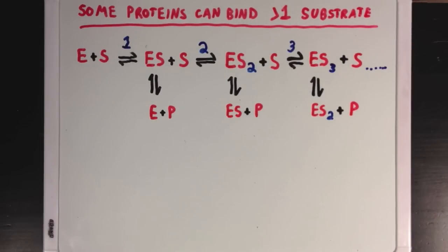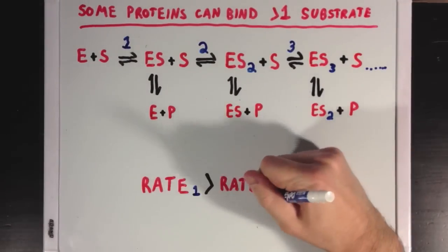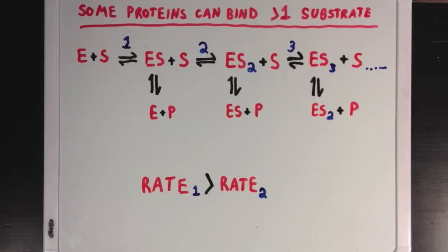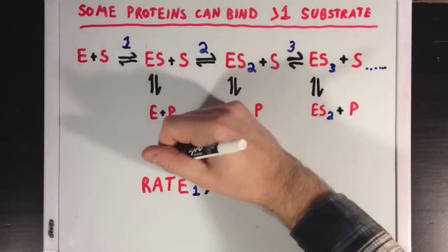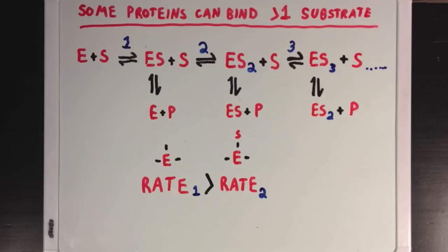You would expect the rate of reaction 1 to be faster than the rate of reaction 2. If we're looking at the example of an enzyme with three substrate binding sites, there are three empty sites available for substrate to bind through reaction 1, and only two available for reaction 2, so you would expect rate 1 to be faster.